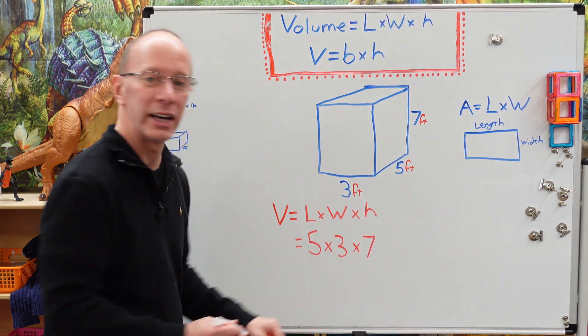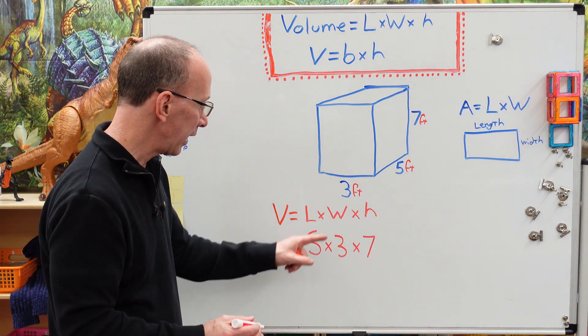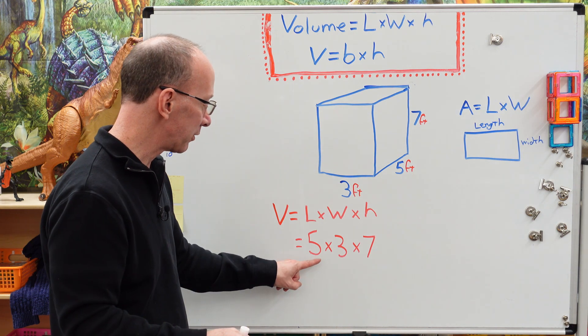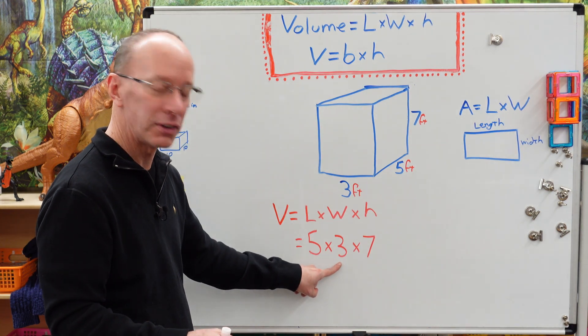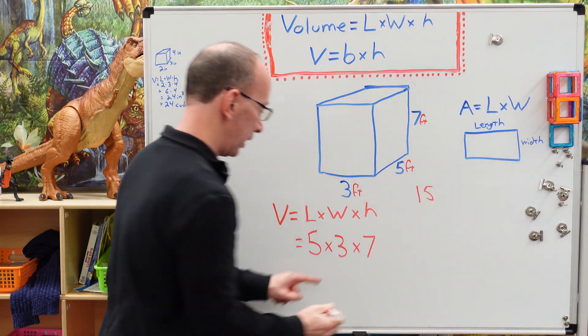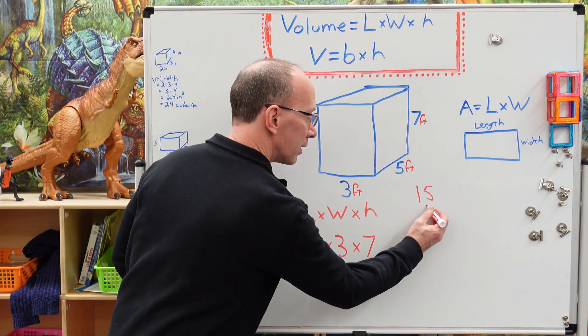So now I'm going to go ahead and multiply that. And doesn't matter what numbers you multiply first, whatever's easier for you. So I'm going to take five times three is 15. So I'm going to have to do a little figuring here on this side. And then 15 times seven.